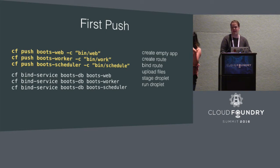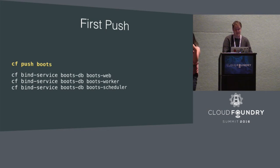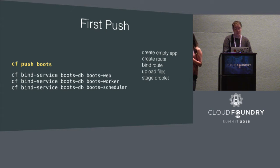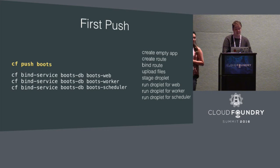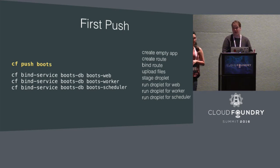Once that's done we can run the droplet and have our app up and running, but it does take a lot of time because we're doing the same thing over and over again. So what does this look like in V3? It's a lot simpler — you can just push Boots, your one app. We're doing a lot of the same steps, but we only have to do them once instead of once per app. Once we've done a single stage and made our single droplet, we're able to run that same droplet three separate times. This implies it's using the V3 API — this CLI command doesn't exist yet, but we're showing what the CLI could look like, or what a plugin could look like.